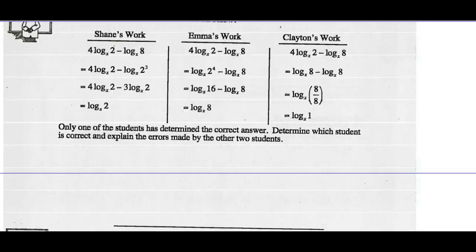If you had a chance to look through this, we would see that Shane's work is correct. He's done everything right there. Emma tries to go about it a different method. She uses the power law, brings the exponent in to the argument, gets to this step correctly, but then she incorrectly applies the quotient law.